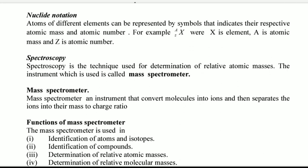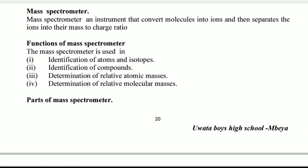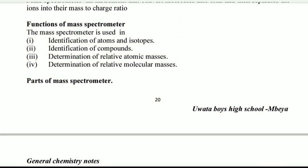Functions of mass spectrometer: identification of atoms and isotopes, because here you can know different isotopes of an atom; identification of compounds; determination of relative atomic mass; and determination of relative molecular masses.